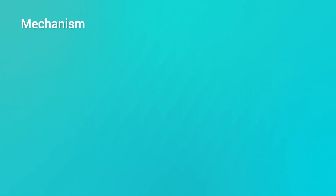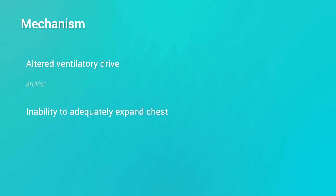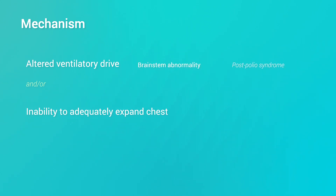Central sleep apnea occurs when there is an altered ventilatory drive or when there is an inability to adequately expand the chest. Loss of ventilatory drive can be a result of brainstem abnormality — for example, in post-polio syndrome or after brainstem stroke — or ventilatory suppression caused by opiates and alcohol.